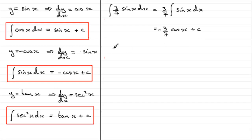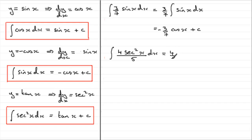Let's try another type. Suppose we had the integral of 4 sec squared x all over 5, with respect to x. It might look different, but we can still regard this as 4 fifths. So we get 4 fifths times the integral of sec squared x with respect to x. The integral of sec squared x with respect to x is tan x. So we just have 4 fifths tan x plus the constant of integration.